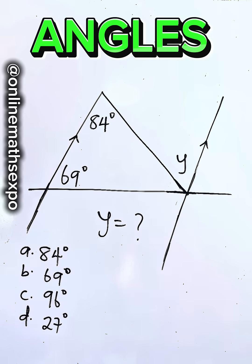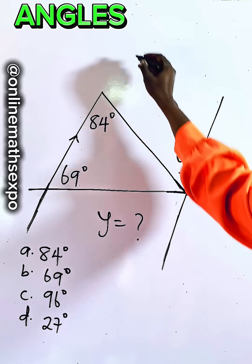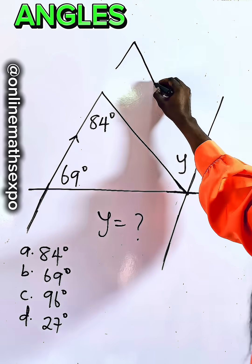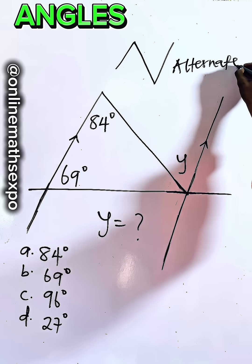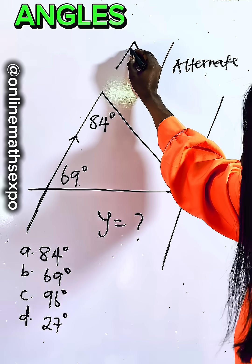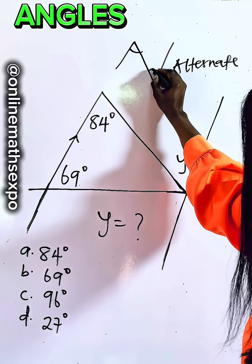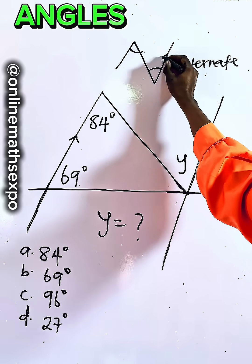One of the angles it reminds you of is the angle on a Z shape. We say that such angles are alternate, and alternate angles are equal. So the angle formed here alternates with the one formed here on a Z shape.